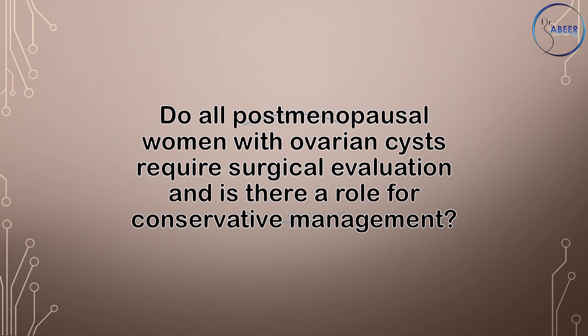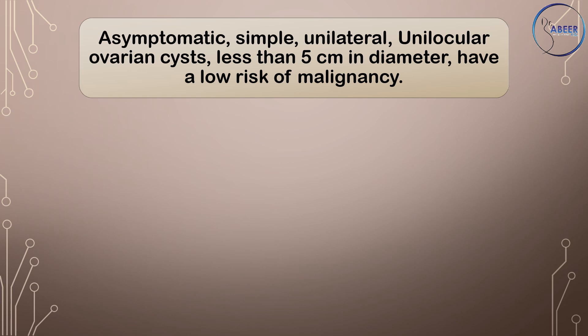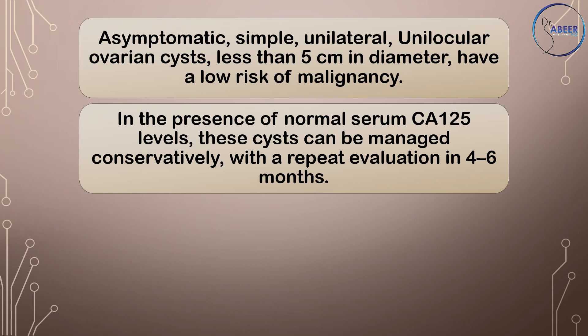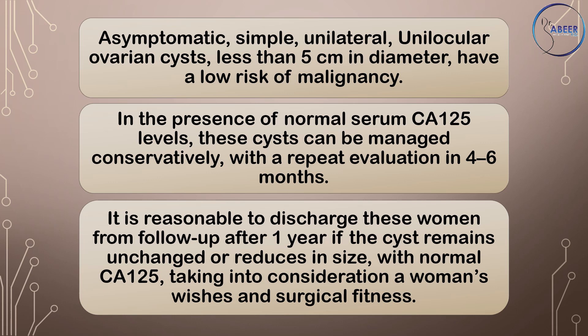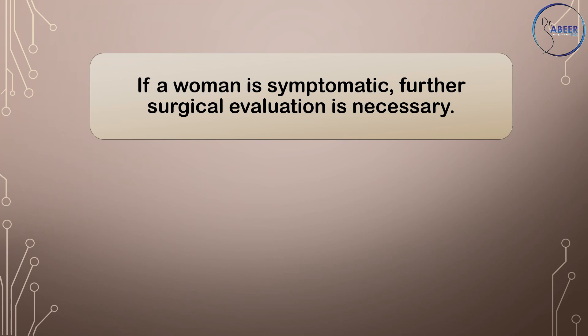Do all postmenopausal women with ovarian cysts require surgical evaluation and is there a role for conservative management? Asymptomatic, simple, unilateral, unilocular ovarian cysts less than 5 cm in diameter have a low risk of malignancy. In the presence of normal serum CA-125 levels, these cysts can be managed conservatively with a repeat evaluation in 4 to 6 months. It is reasonable to discharge women from follow-up after 1 year if the cyst remains unchanged or reduces in size with normal CA-125, taking into consideration a woman's wishes and surgical fitness. If a woman is symptomatic, further surgical evaluation is necessary.